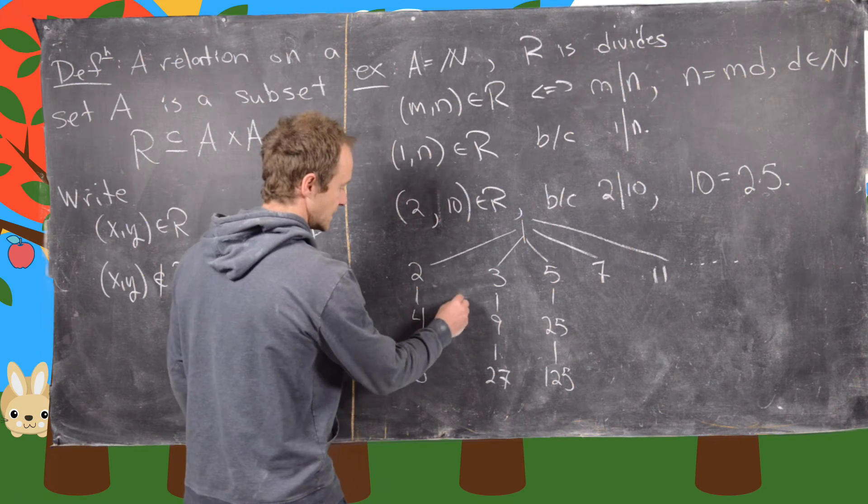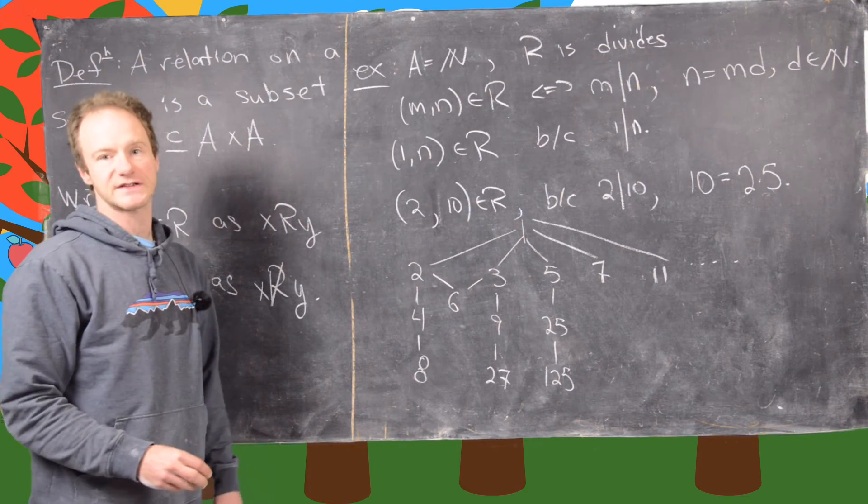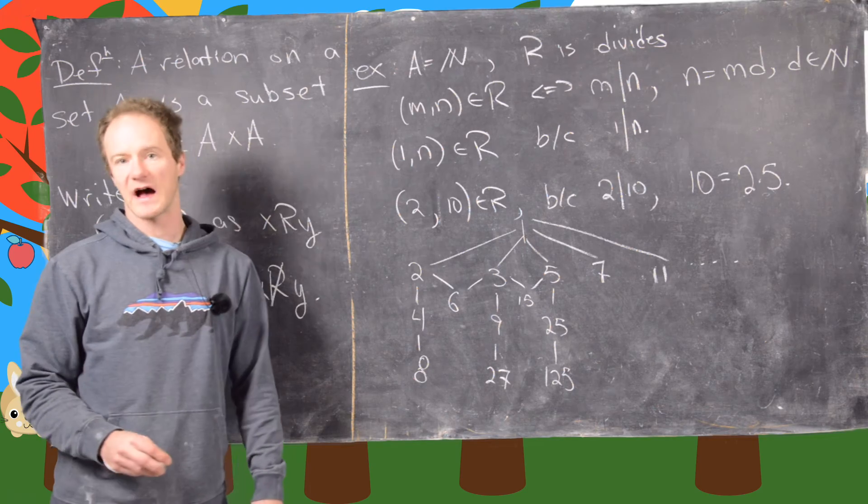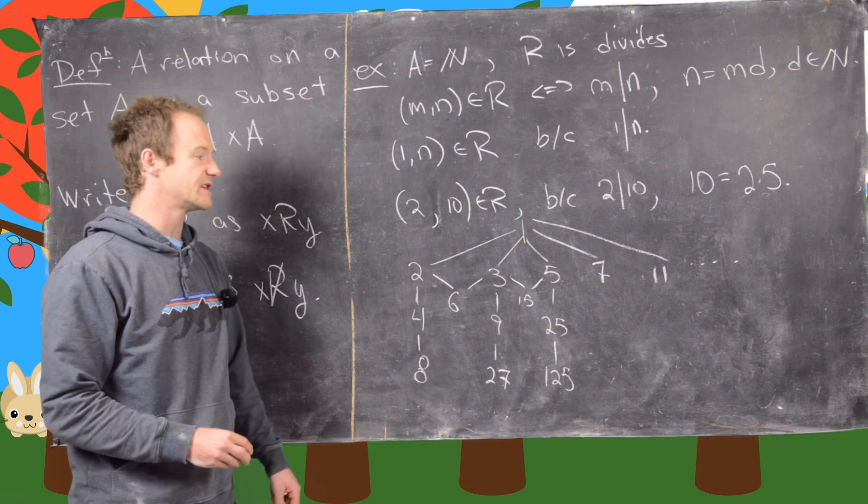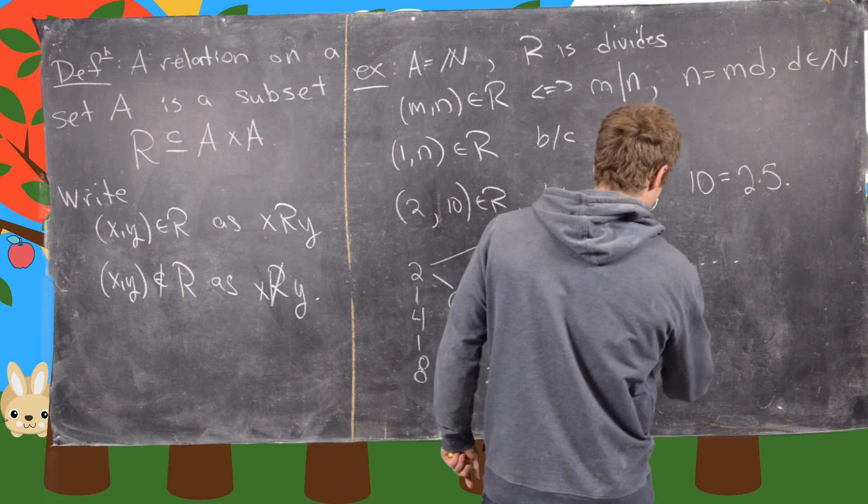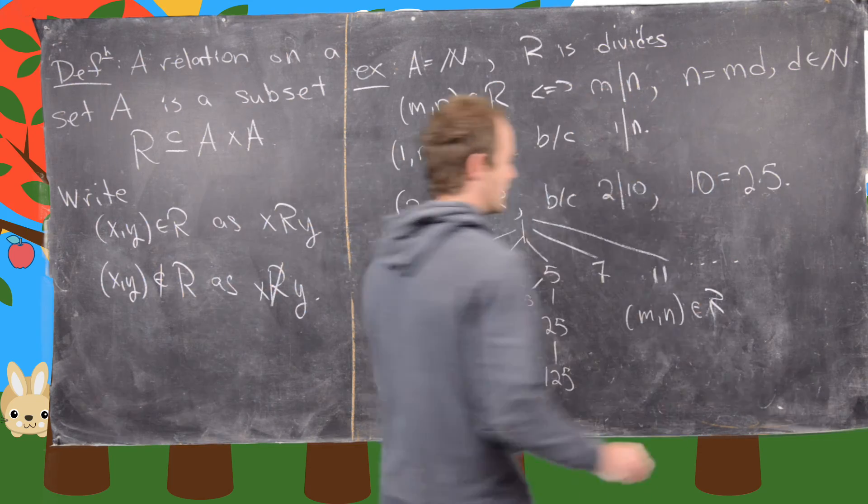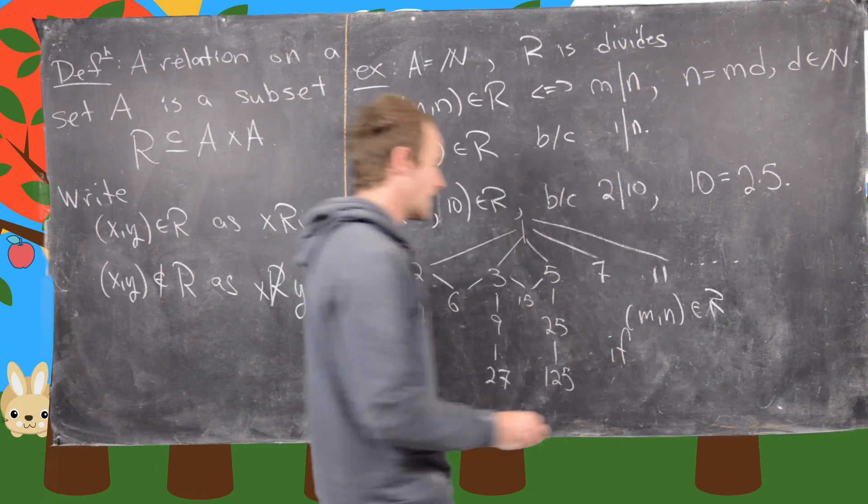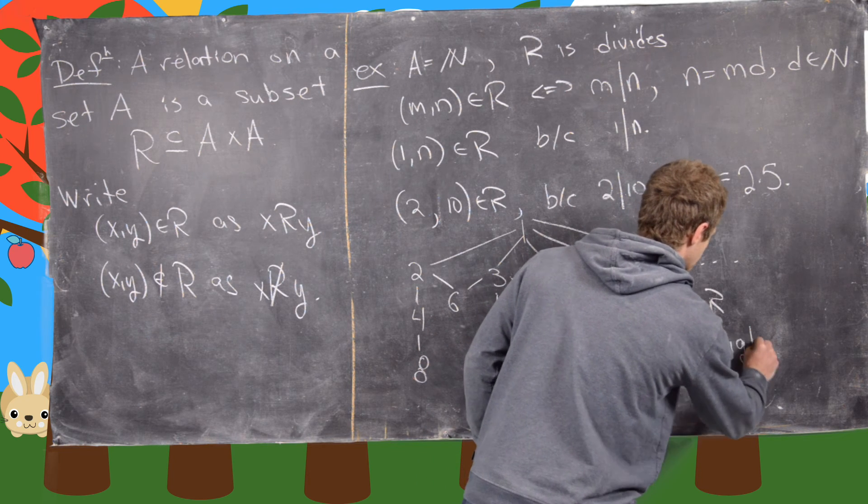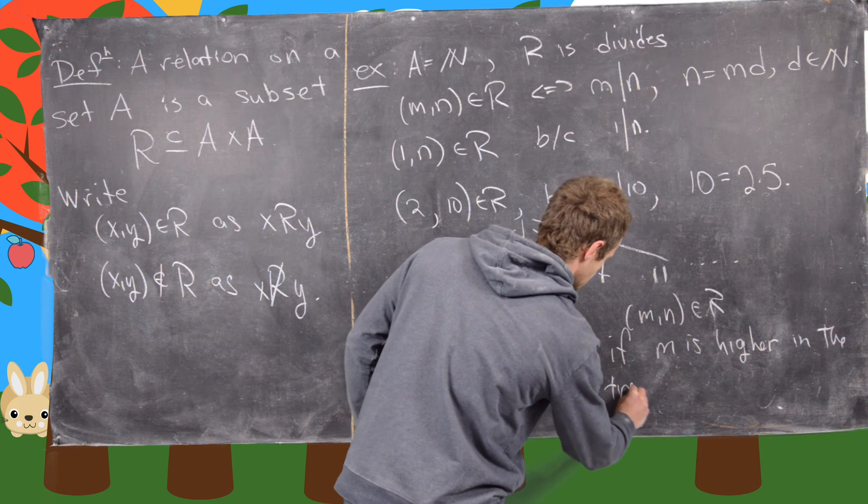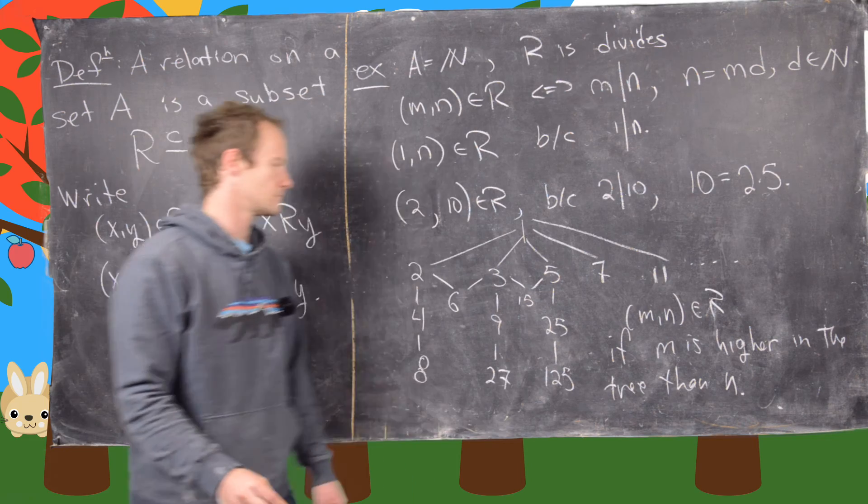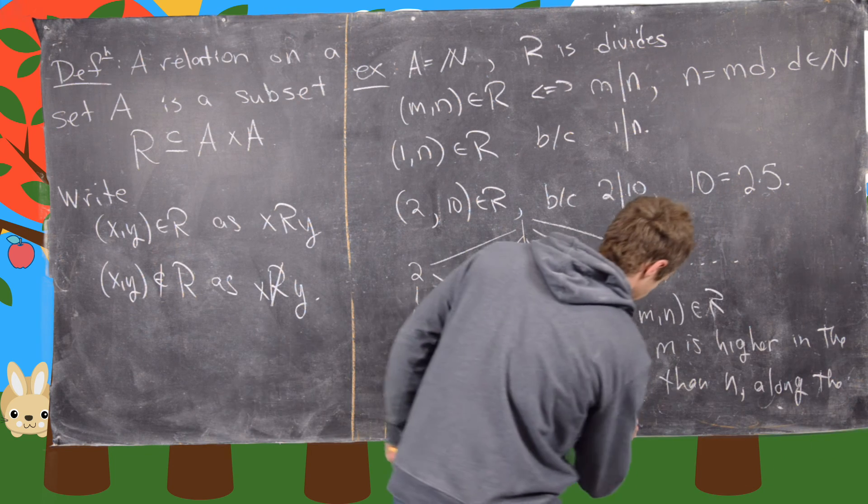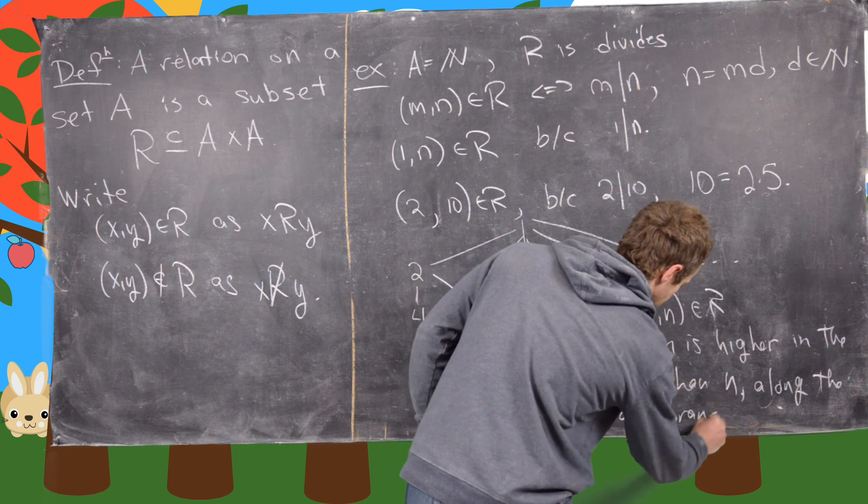So notice 6 is divisible by 2 and 3. So it would end up in this spot right here. And then similarly, 15 is divisible by 3 and 5. So it would end up in this spot right here. So notice in this tree diagram, we could say that M and N is an element of our relation R if M divides N, in other words, if M is higher in the tree than N along the same branch.